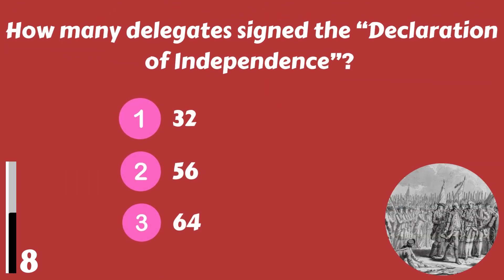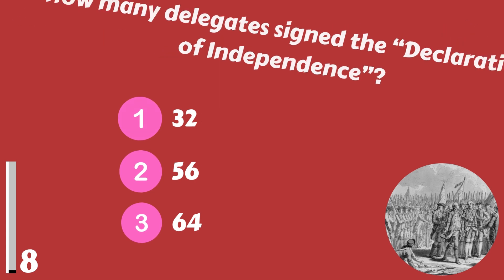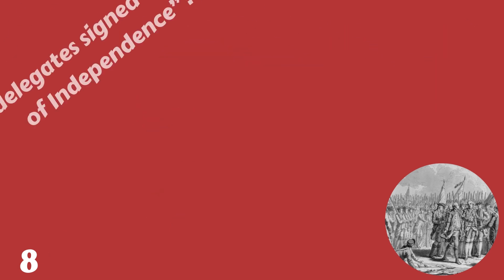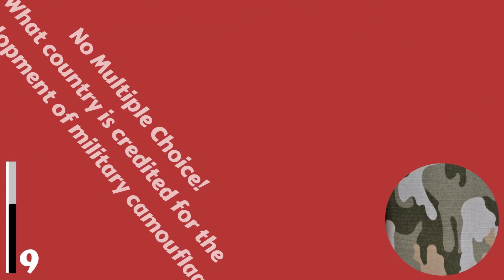How many delegates signed the Declaration of Independence? 32, 56, or 64? There were 56 delegates signing the Declaration of Independence.